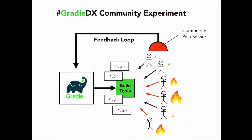What I wanted to propose today is a community experiment for measuring DX inside the Gradle ecosystem. We're already seeing problems start to snowball in the plugin ecosystem because we have no visibility — nothing to tell us what things need improvement, what things people are having problems with. It's all a bunch of stuff that I think could use a lot of improvement and love from the community.